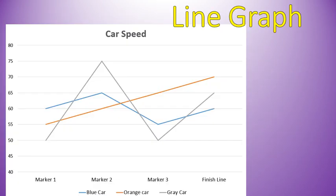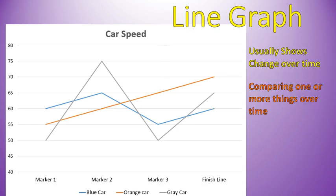Line graphs. A line graph is typically used to show change over time, so we are comparing one or more things over time. The example I use here is car speed at marker 1, marker 2, marker 3, and the finish line of three different cars — just showing their general speed. You could ask questions such as who was going fastest at marker 3. You would look at marker 3 and compare the three values there. The orange car is going the fastest at marker 3.